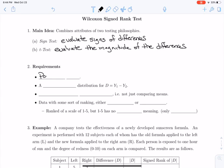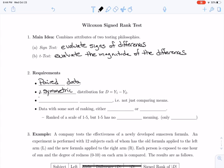This is, again, a test for paired data. It does require a symmetric distribution for y1 minus y2, though. And it compares nonparametric differences, so not just comparing means. This is comparing data with some sort of ranking, either cardinal or ordinal.